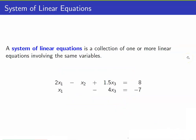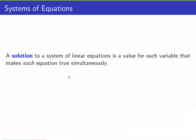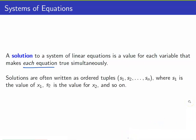A system of linear equations is a collection of one or more linear equations involving the same variables. In this case, our variables would be x1, x2, and x3. A solution to a system of linear equations is a value for each variable that makes each equation true — we want all of the equations to be satisfied. The solutions are often written as ordered tuples: s1, s2, and sn, wherein if you plug in s1 for the first variable, s2 for the second variable, and so on, all the equations will be true.